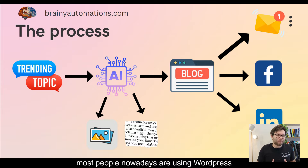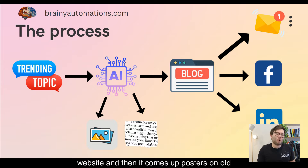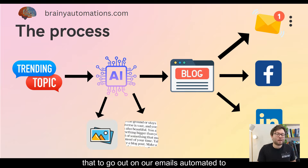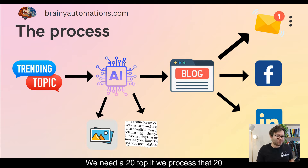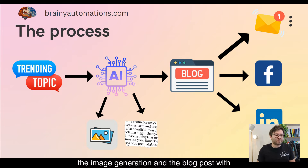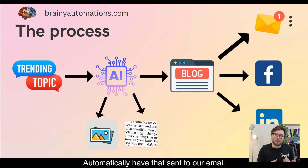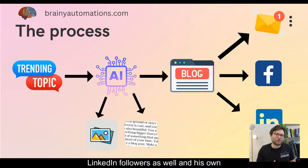Most people nowadays are using WordPress, so I'm just going to pretend we've got a WordPress website. Once that post is on our WordPress website, we can then automate that to go out on our emails, automate it to go out on our Facebook, and automate it to go out on our LinkedIn. So just to quickly recap: we need a trending topic, we process that with AI for image generation and the blog post, we post that to our website, and we automatically have that sent to our email subscribers, Facebook followers, and LinkedIn followers.